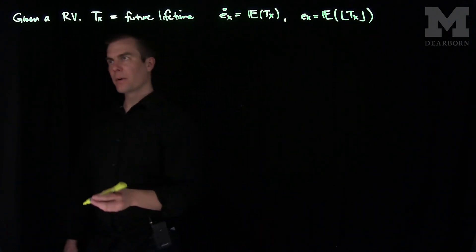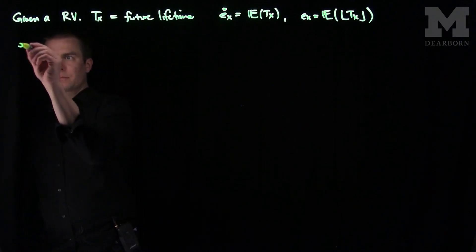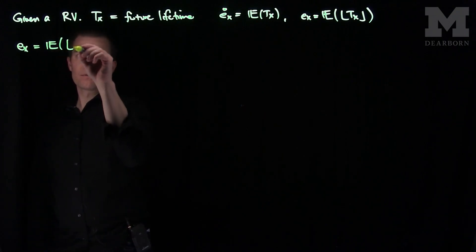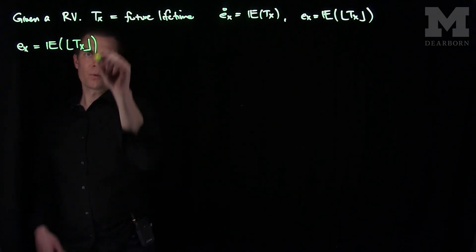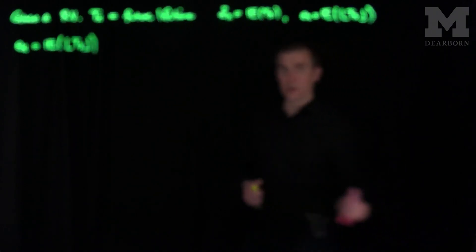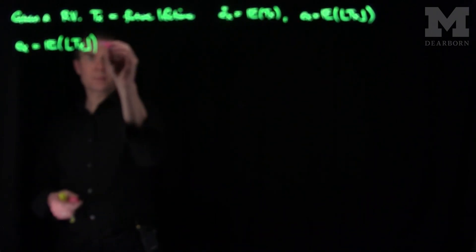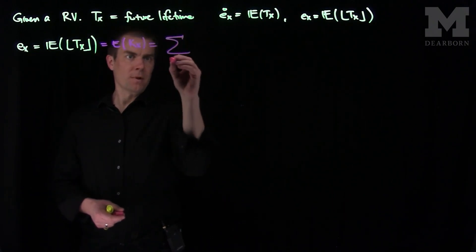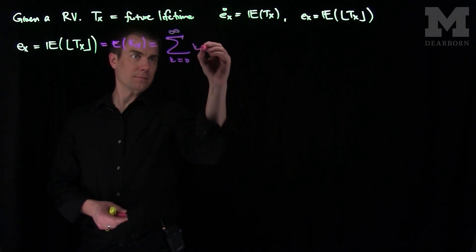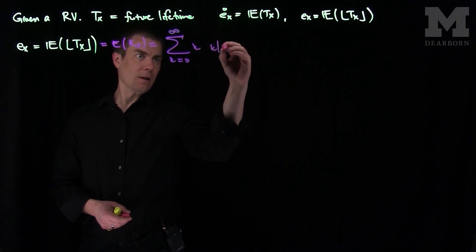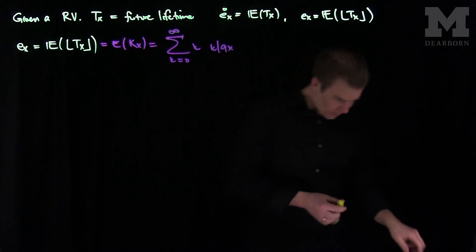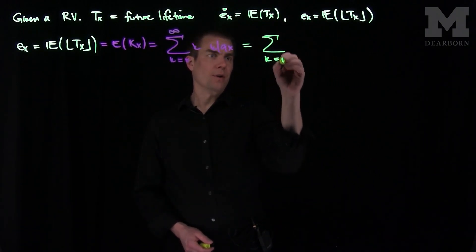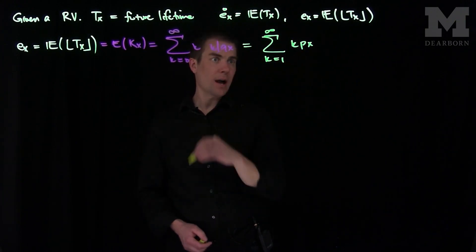Now if we look at the discrete random variable Ex — that is, the expected value of the floor of Tx, also written as Kx — this equals the sum from zero to infinity of k times k|qx. We also saw a different representation: the sum from k equals one to infinity of kPx.